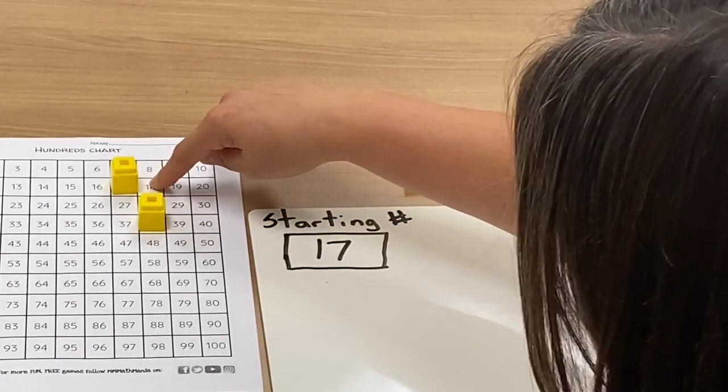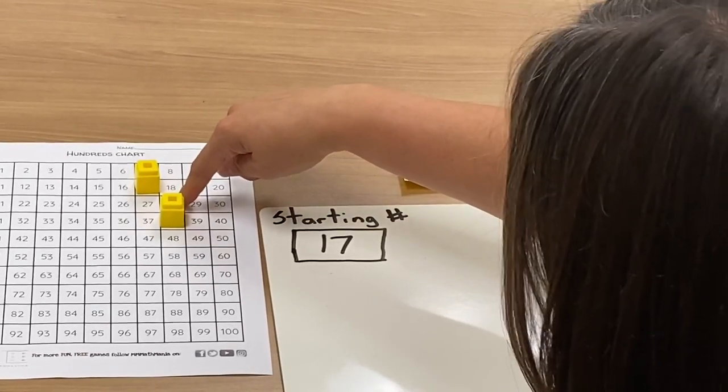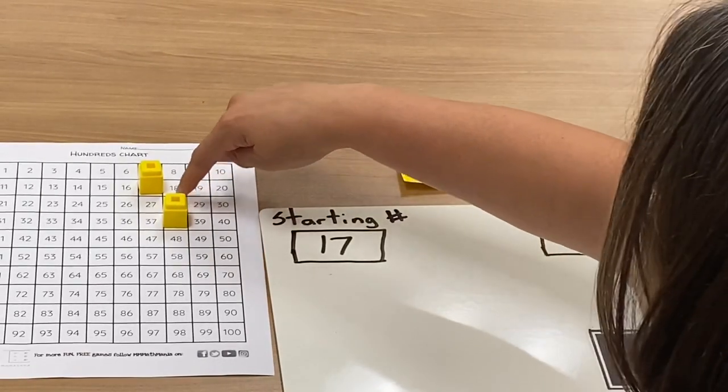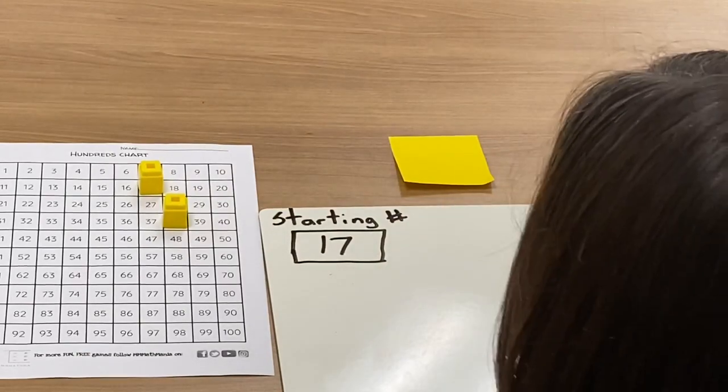If you move to the right one space that's adding one. If you move down one space it's adding 10. If you're moving to the left you're taking away one.